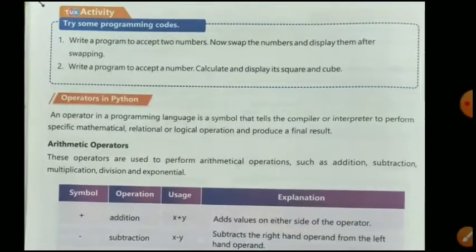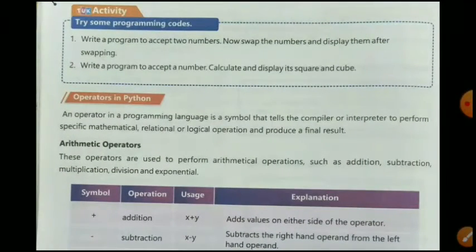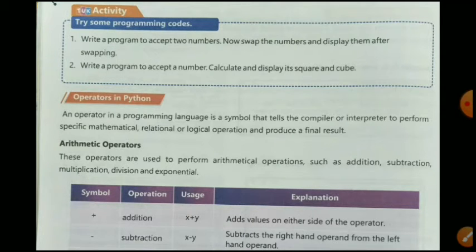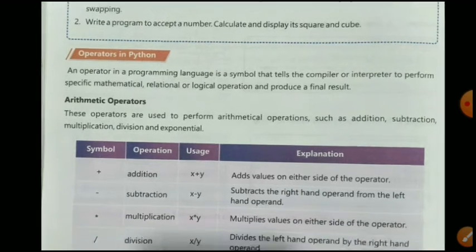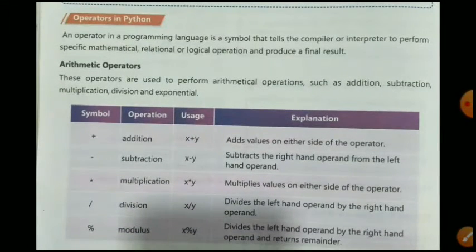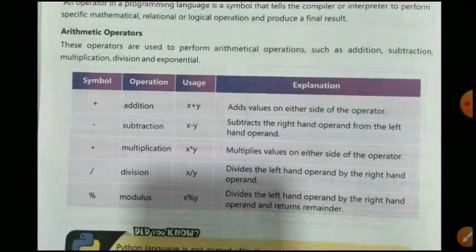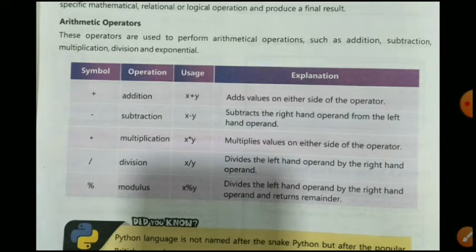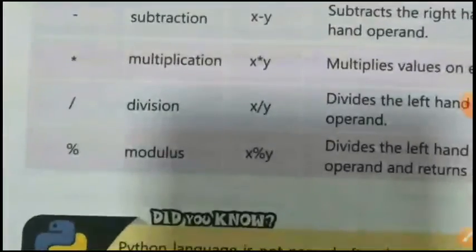Next are operators in Python. An operator in a programming language is a symbol that tells the compiler or interpreter to perform specific mathematical, relational, or logical operations and produce a final result. There are arithmetic operators used to perform mathematical operations such as addition, subtraction, multiplication, division, and exponentiation. The symbols are: plus for addition, minus for subtraction, asterisk for multiplication, slash for division, and percent for modulus.